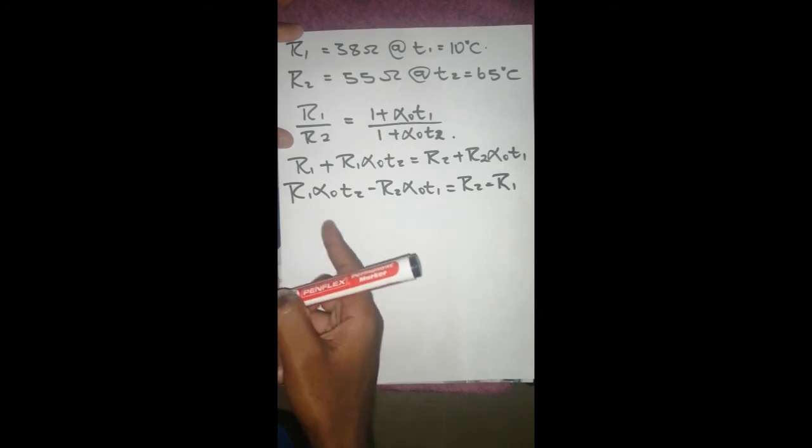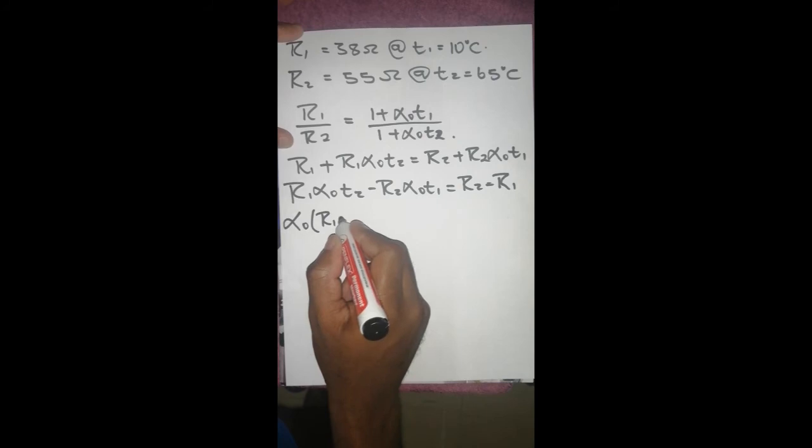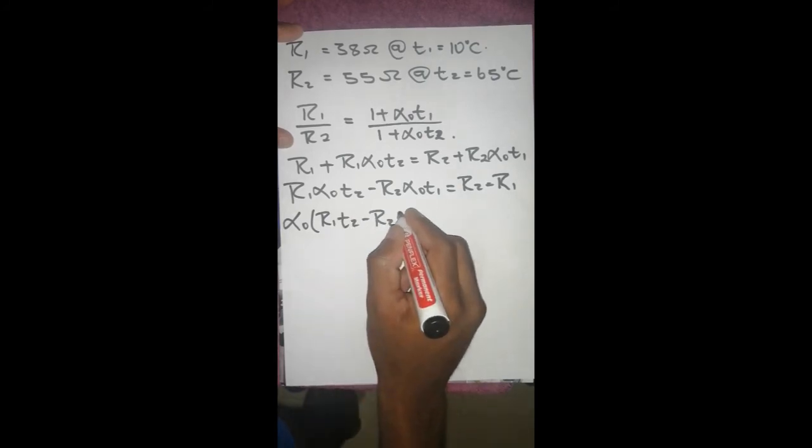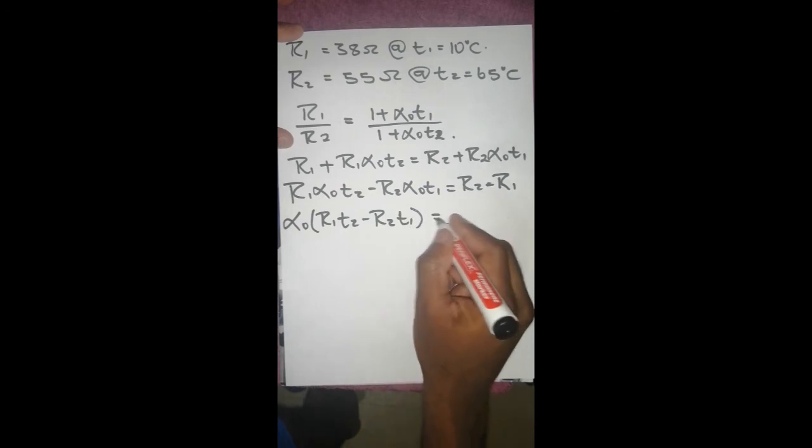Then we factor out alpha. So it's going to be alpha zero times R1 T2 minus R2 T1 equals to R2 minus R1.